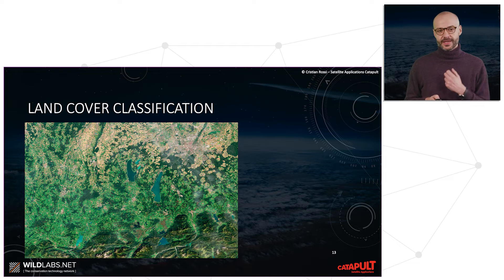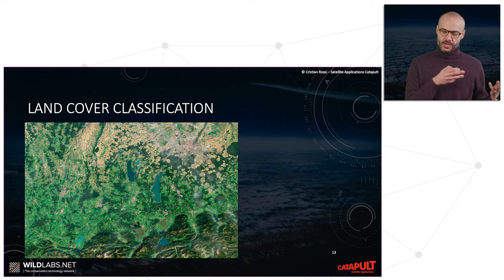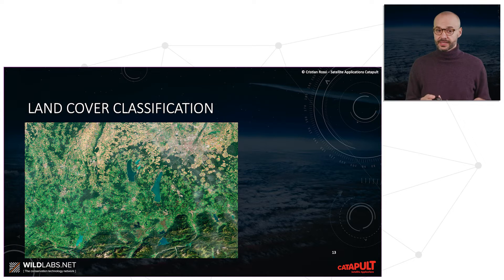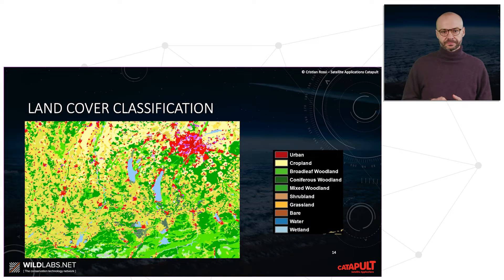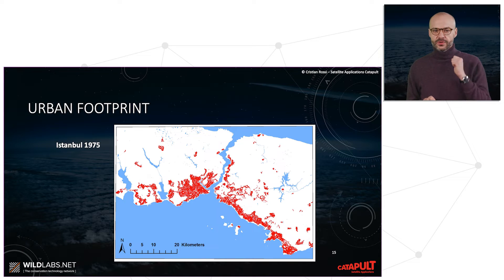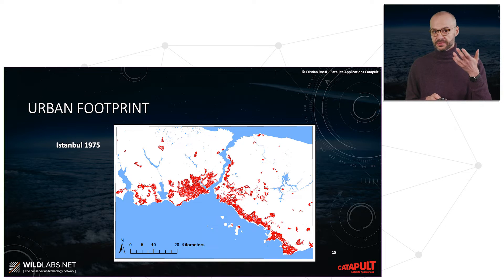Another type of application that is very characteristic of remote sensing is land cover classification. Each part of the land behaves differently in terms of spectral characteristics depending on the land itself. By using this information, we can create a description of the land depending on the land cover, such as in this case over the Munich area in Germany. If we take just one land cover category — for example, urban — we can see the evolution of cities.